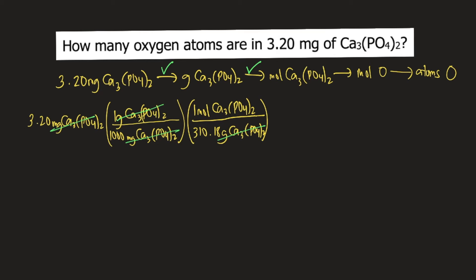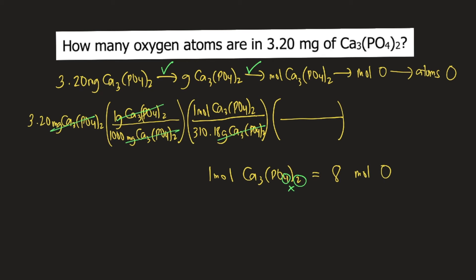Next is to convert moles of calcium phosphate to moles of oxygen. The formula of calcium phosphate is Ca₃(PO₄)₂. One mole of calcium phosphate contains how many moles of oxygen? You have 4 times 2, which equals 8 moles of oxygen. So 1 mole of calcium phosphate contains 8 moles of oxygen, and moles of calcium phosphate will cancel, leaving us with 8 moles of oxygen.